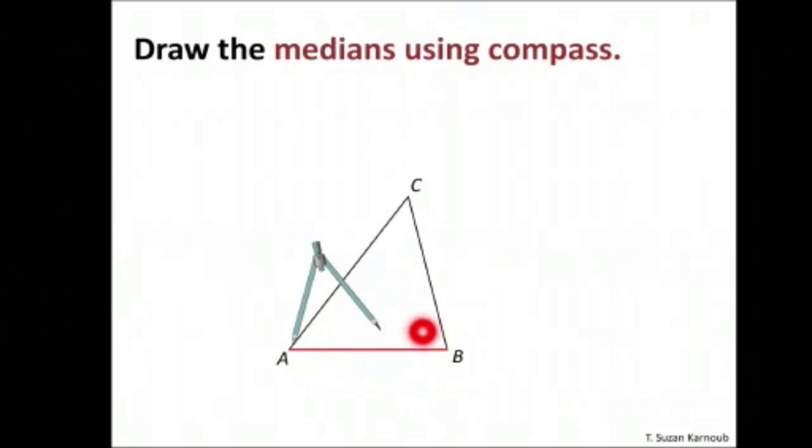I use the compass to mark arcs from both endpoints of the side. I draw arcs above and below, then connect the intersection points. This line determines the midpoint. I don't need the full perpendicular bisector, just the midpoint.